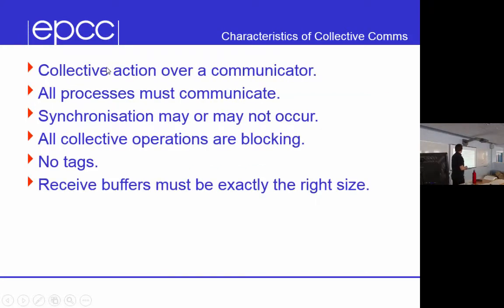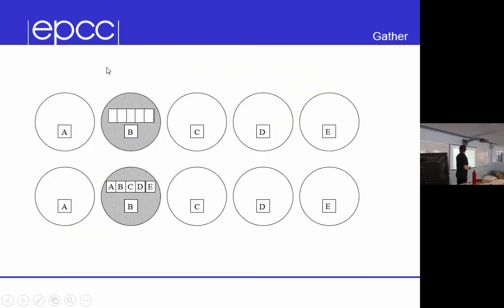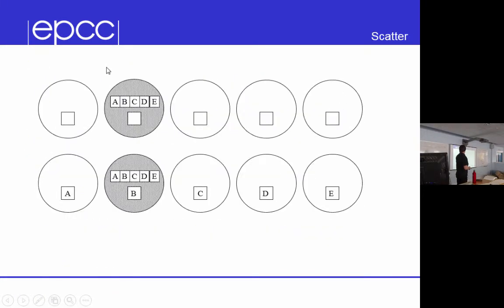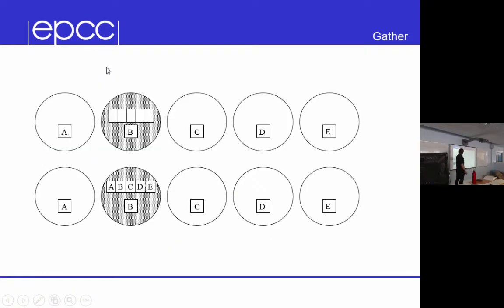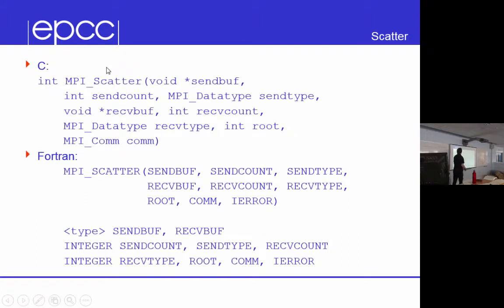There are some things you might be wondering. For example, let's look at Scatter — not broadcast. Scatter takes some data, splits it up and sends it. So if I've got 10 processes and I've got 10 integers, it sends one integer to each process. A goes to process A, B goes to process B. But you look at the prototype and think, wait a second — I have to specify the sendCount and the sendType and the receiveCount and the receiveType. Isn't that a bit redundant?